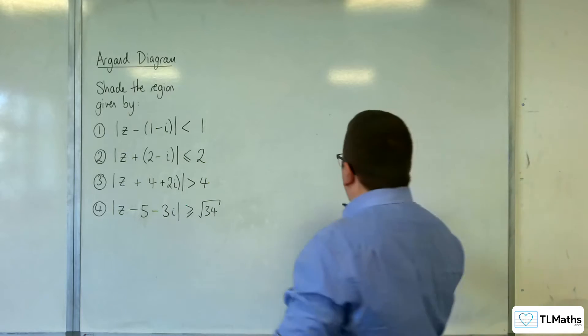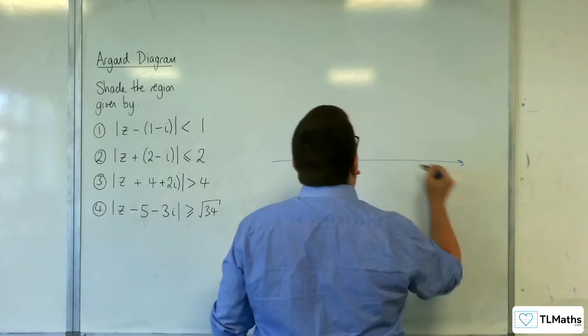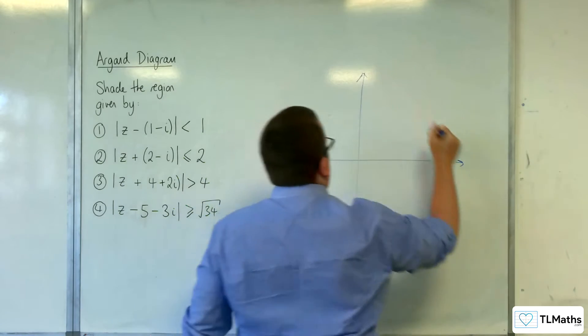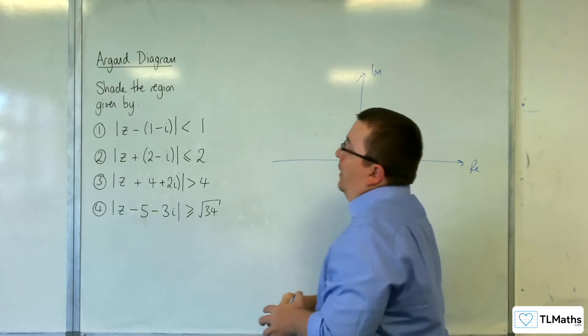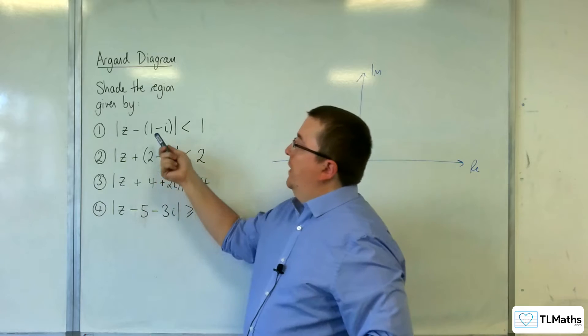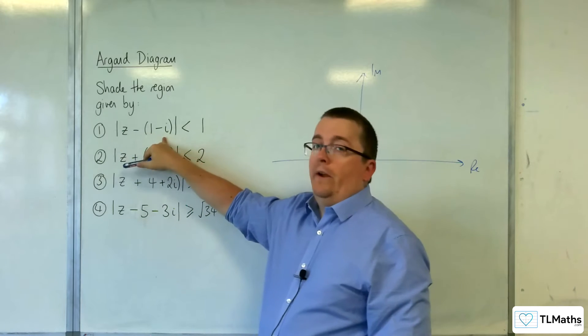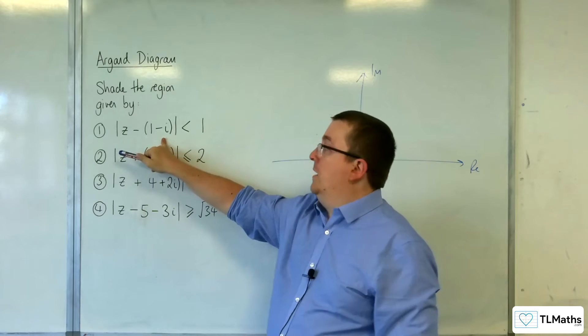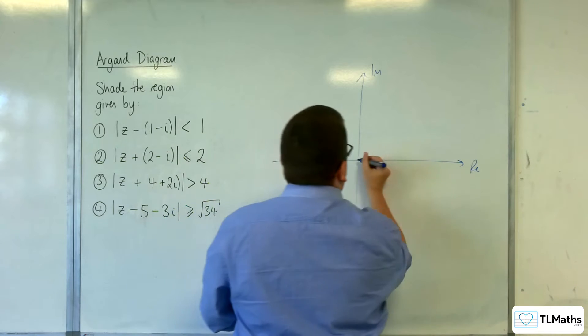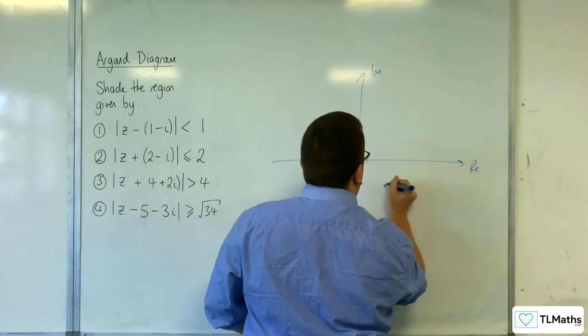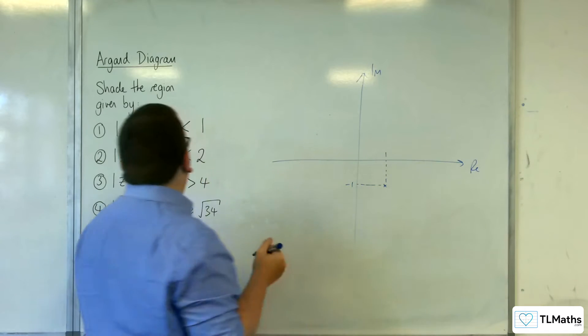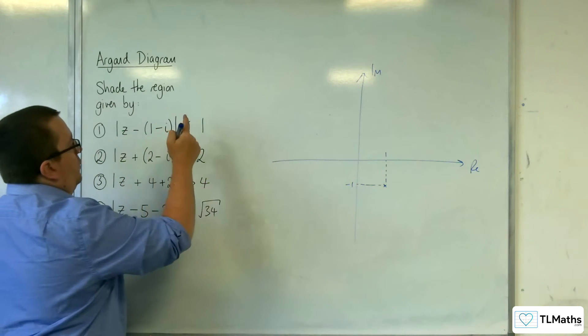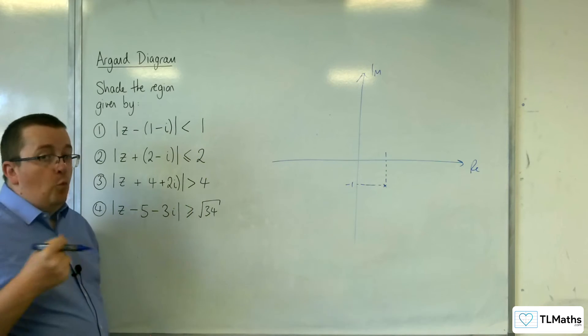So this number 1 then. So we've got the real axis and the imaginary axis. So first of all, identify its centre. So because you're taking away 1 take away i, it's going to be centred at 1 take away i. So 1 take away i, so there. So 1 minus 1.